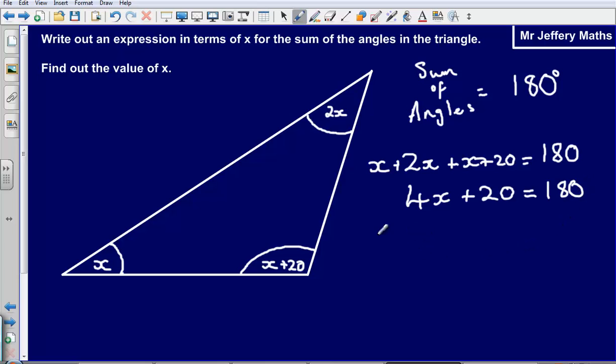Now, let's solve this equation to find out the value of x. So I can say that, first of all, that 4x is equal to 180 degrees minus 20, so that gives me 160.